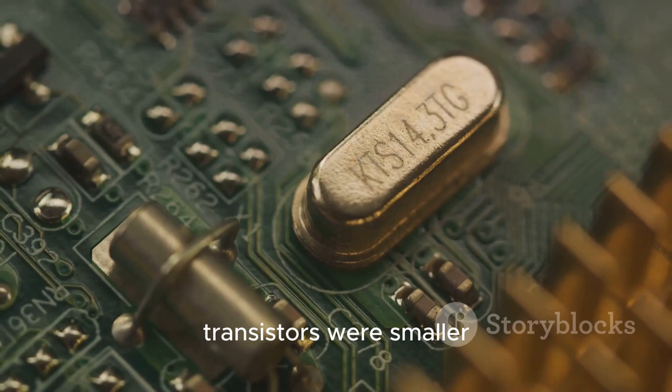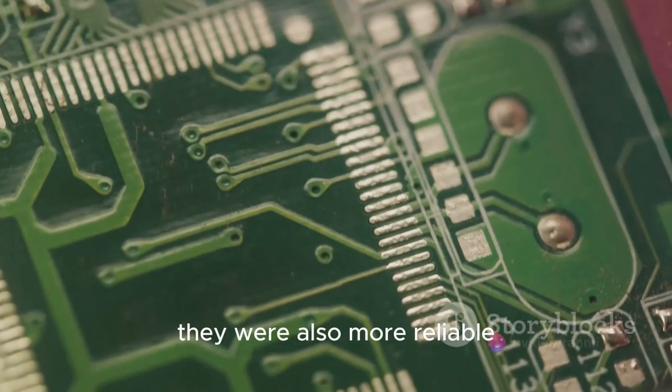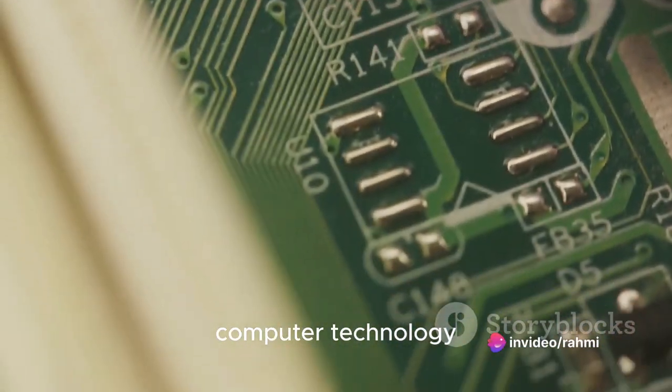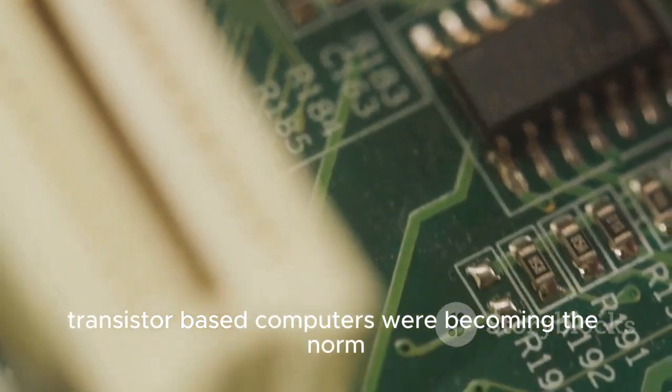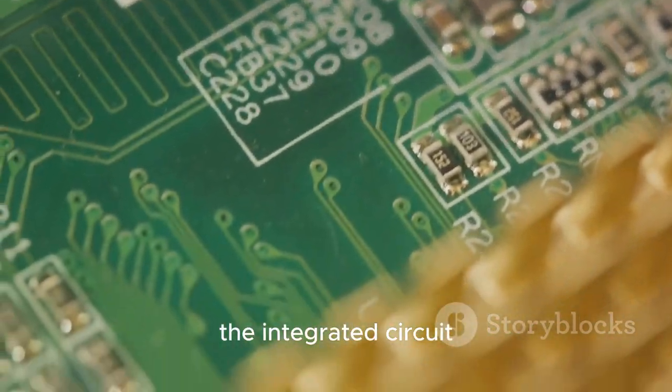Transistors were smaller, faster, and required less power than the vacuum tubes used in ENIAC. They were also more reliable, marking a significant advancement in computer technology. By the late 50s, transistor-based computers were becoming the norm, paving the way for the next significant milestone, the integrated circuit.